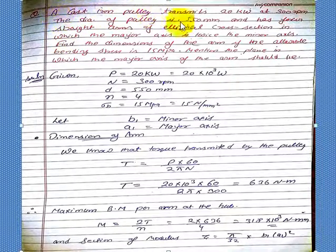A cast iron pulley transmits 20 kilowatt at 300 rpm. Power is 20 kilowatt and the n is 300 rpm. The diameter of pulley is 550 mm and has 4 straight arms of elliptical cross section.